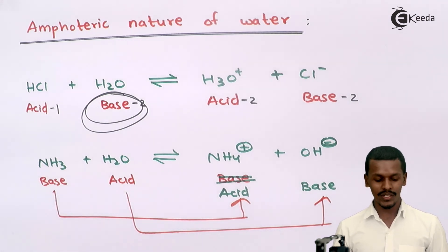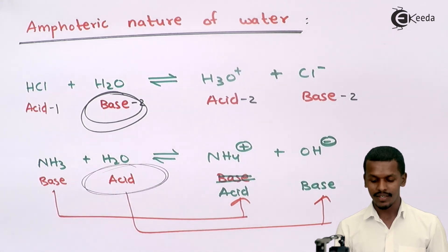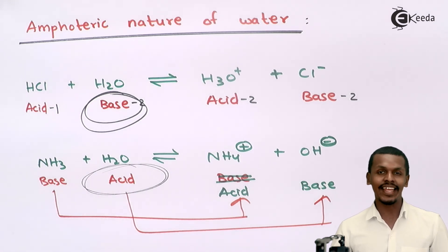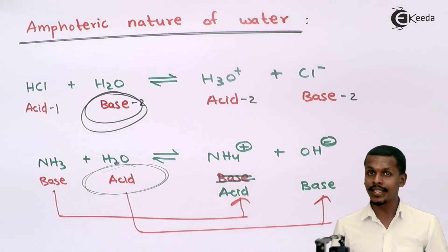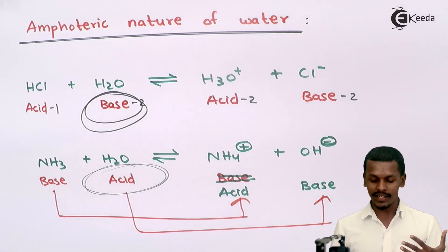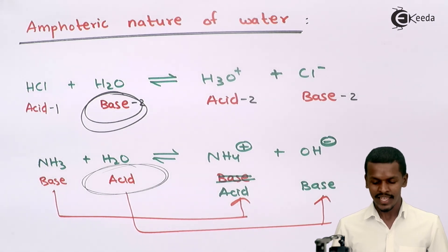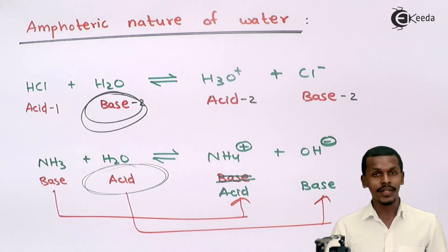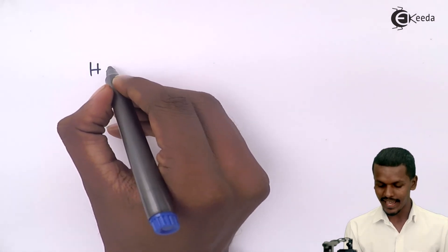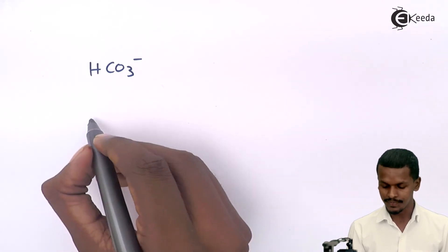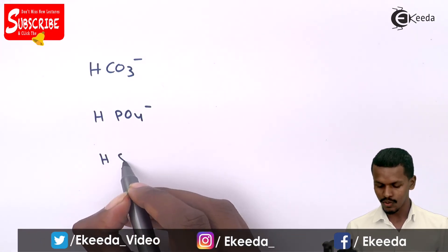If you observe, in the NH₃ reaction H₂O was acting like an acid, but earlier in the HCl reaction it was acting like a base. So H₂O can act like an acid and can act like a base, depending on with whom it has been reacting. This is the theory behind water behaving as both acid and base. Not only water, but there are also certain molecules or ions that act as amphoteric in nature — for example HCO₃⁻, HPO₄²⁻, and HSO₄⁻.